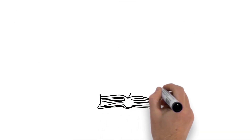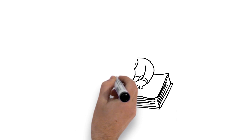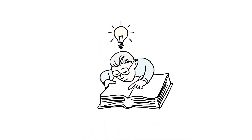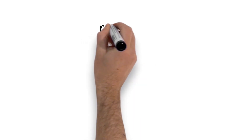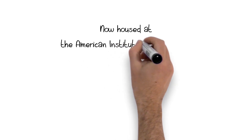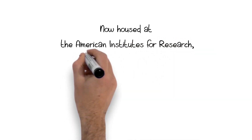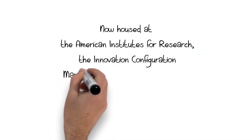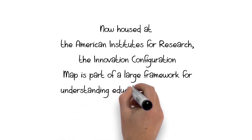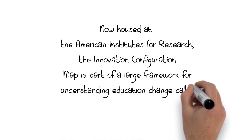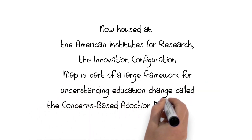This is the basic concept that led the Research and Development Center for Teacher Education to develop the idea of Innovation Configuration Maps, or IC Maps. Now housed at the American Institutes for Research, the Innovation Configuration Map is part of a large framework for understanding education change called the Concerns Based Adoption Model, or CBAM.